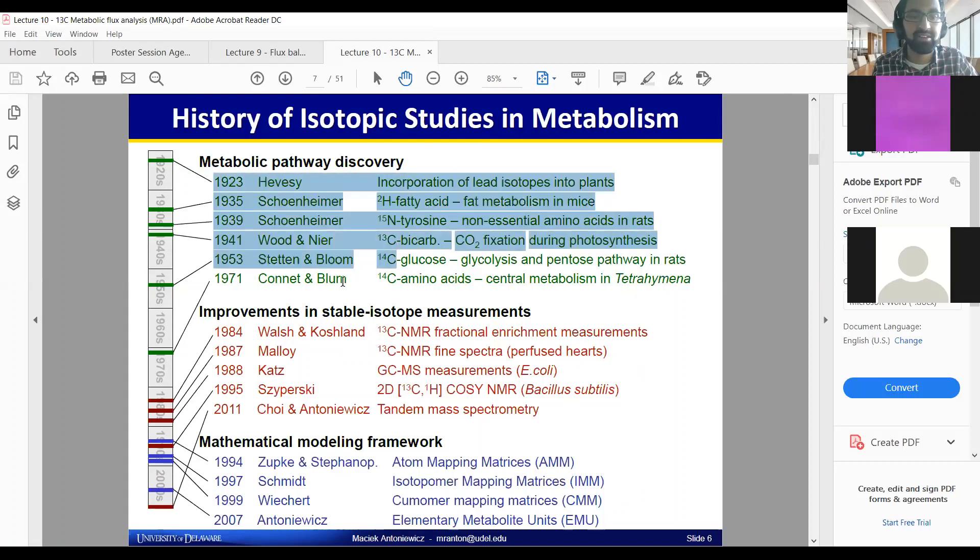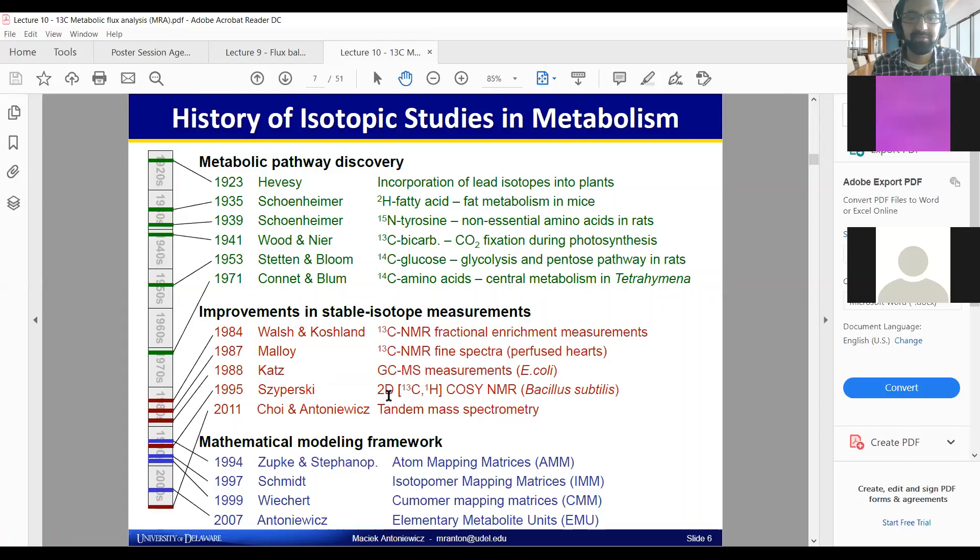You could see this area developing. These isotopic studies related to metabolism involved a lot of work on the metabolic pathway discovery where they could be used to figure out and follow pathways over a number of decades.